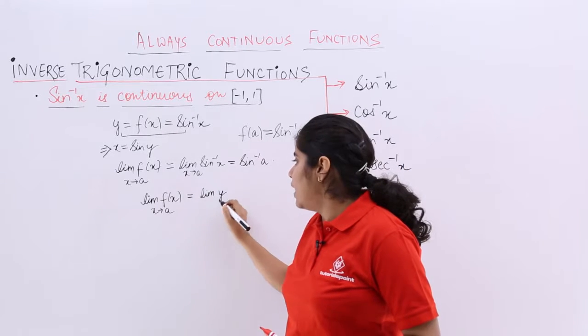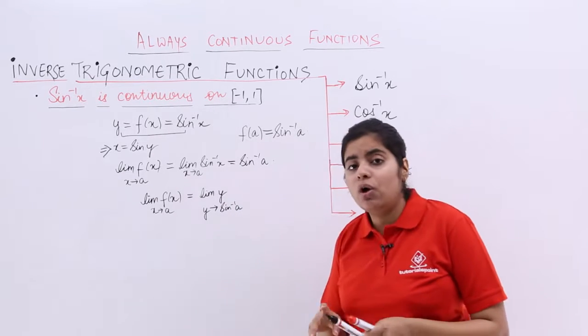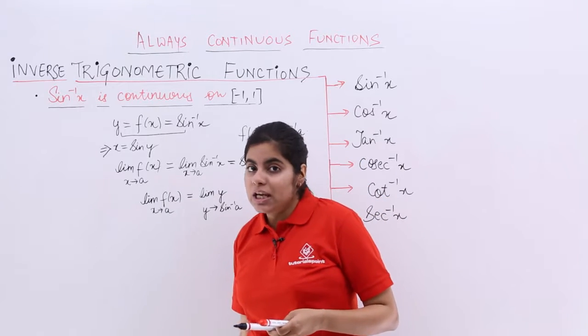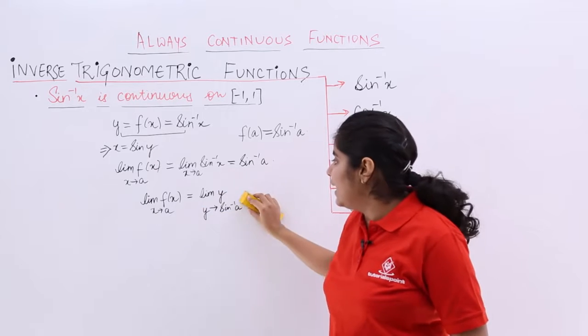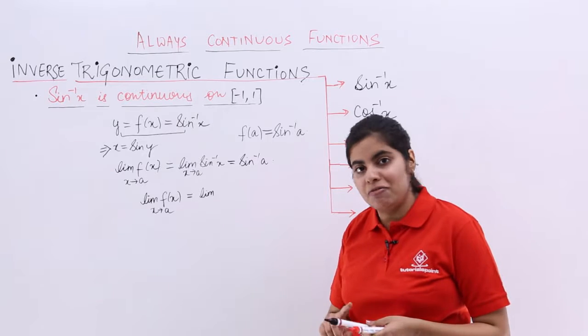It is limit y, y tends to sine inverse a. You can always place it more appropriately. I know that it is about x in the initial steps. But later, if I wish to prove it in the form of y, I need to change everything in y.